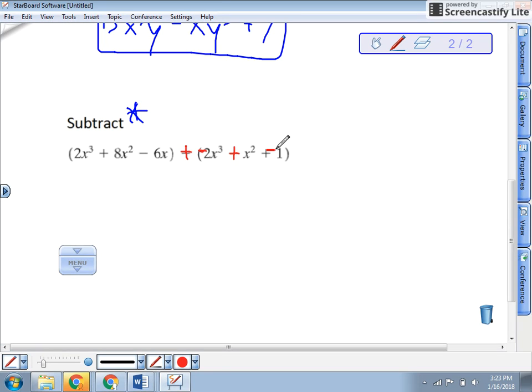So remove the parentheses and group them. So I've got 2x to the third right here. Minus 2x to the third. Then I've got an 8x squared. Again, keep the sign that's in front of it with it. And I've got a positive x squared. And then I've got a minus 6x. Nothing goes with that. And I've got this minus 1.